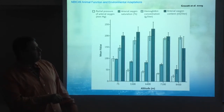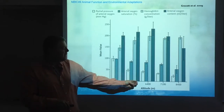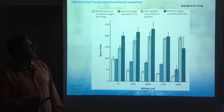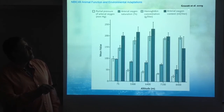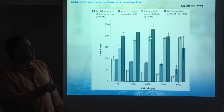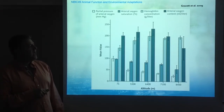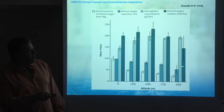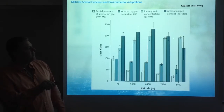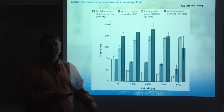This has nothing to do with the altitude per se — it's simply that the subjects, as they keep climbing, are acclimating. As hemoglobin concentration increases, the oxygen content in the arteries also increases. However, notice that by the end, because of the dramatic change in saturation, there is a fall in oxygen content. At that point, the saturation is so much lower that even with the increased hemoglobin concentration, you cannot support the same content.